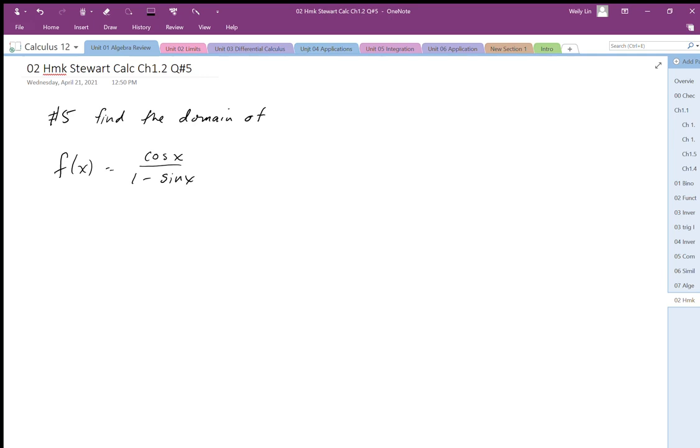For question number five, it says find the domain of f(x) equals cos x over 1 minus sin x.